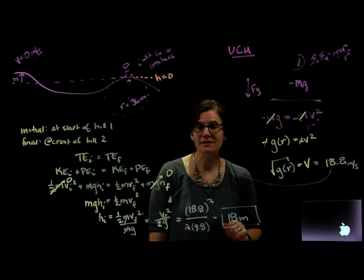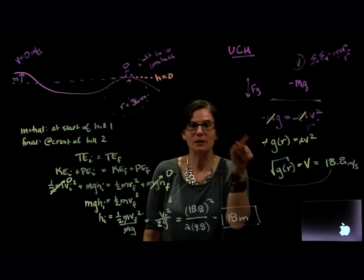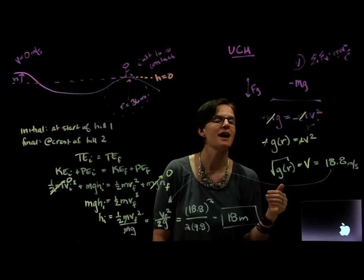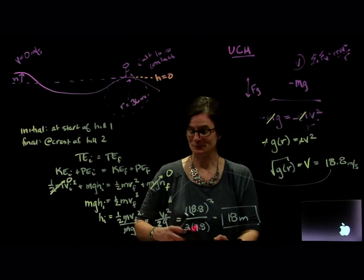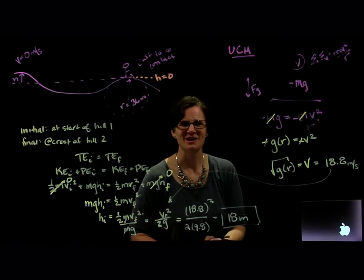Net force is in the downward direction, so keeping in mind that negative. Find the speed that the object would have to be going in that circle to lose contact with the road and use that speed in my relationship. All right, good job.